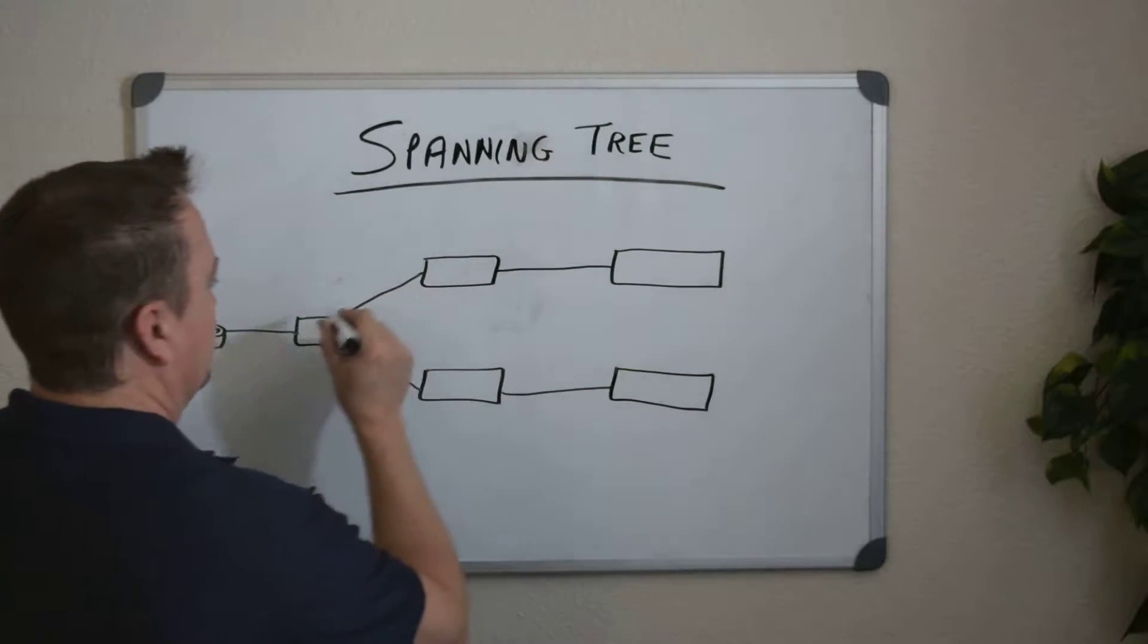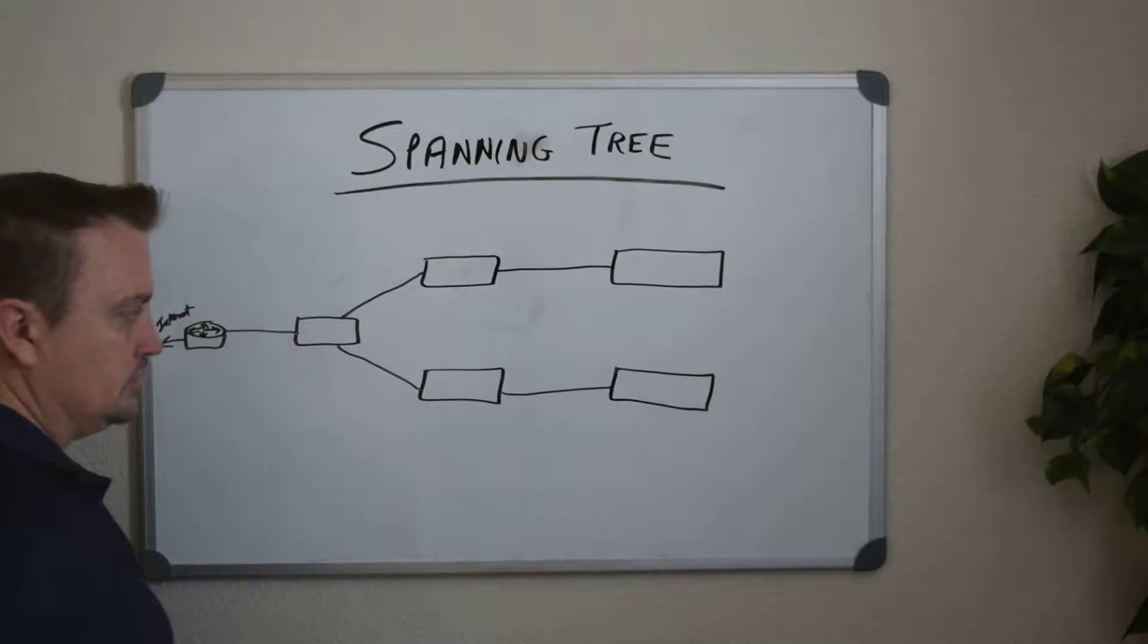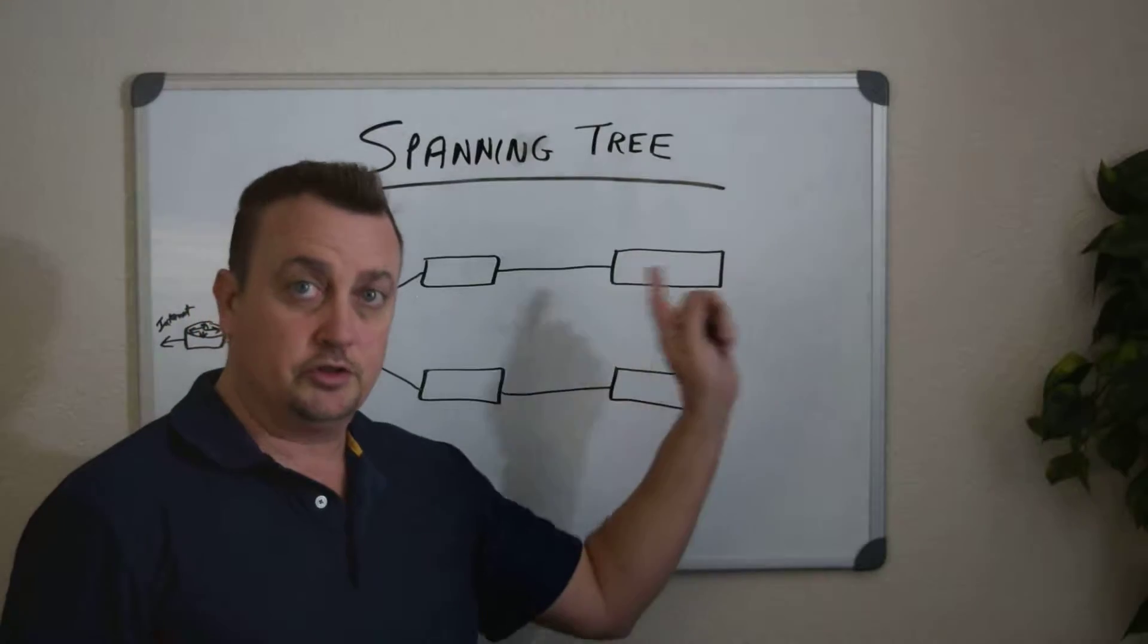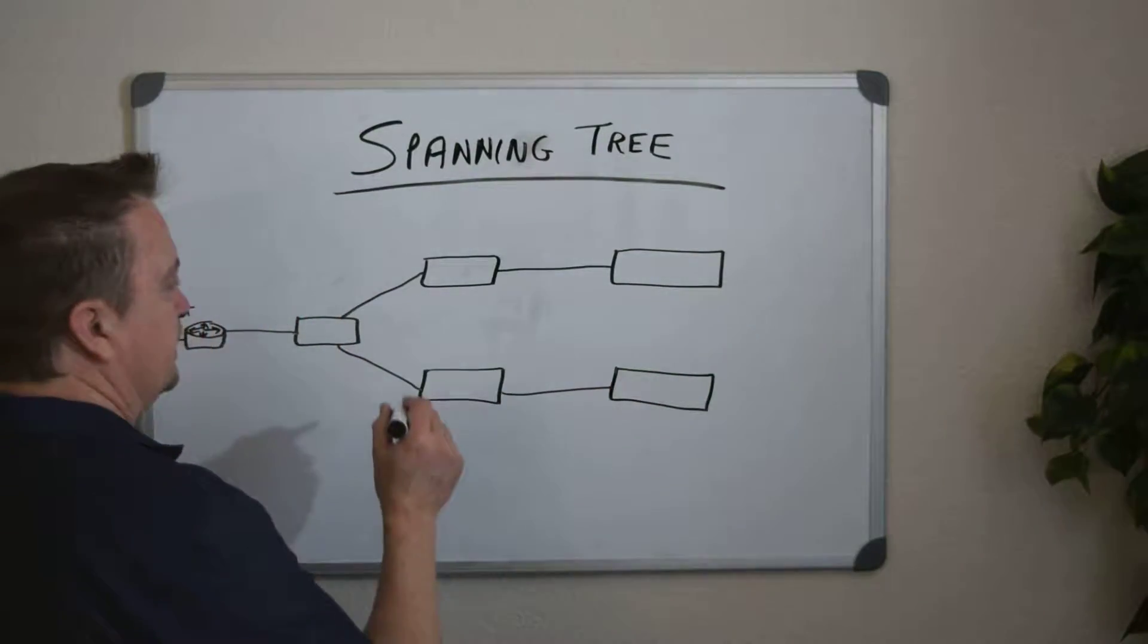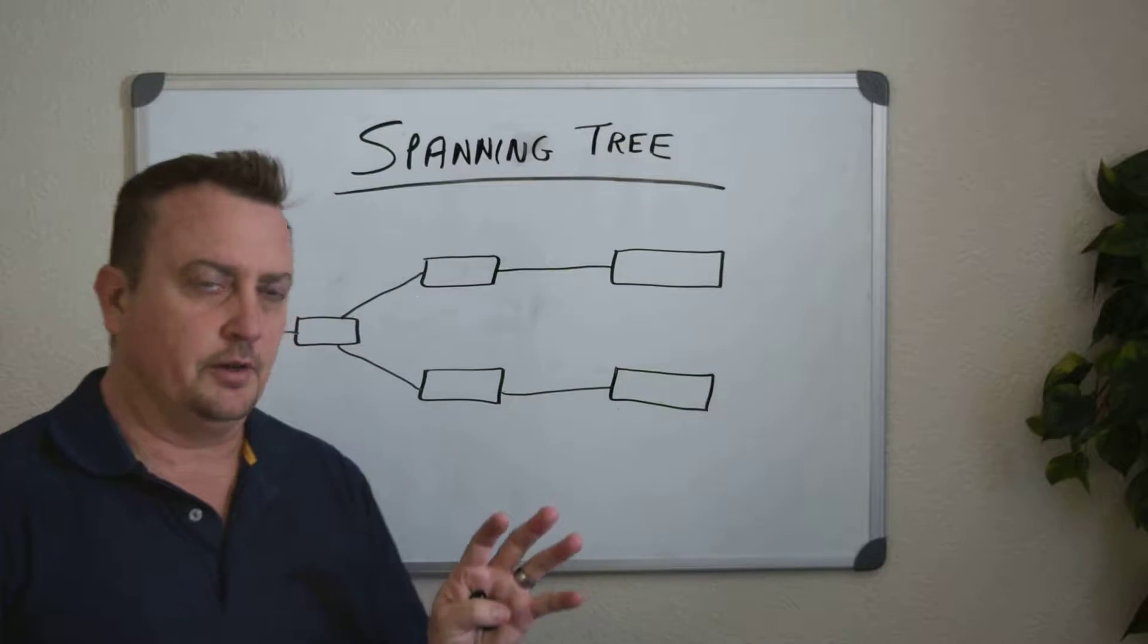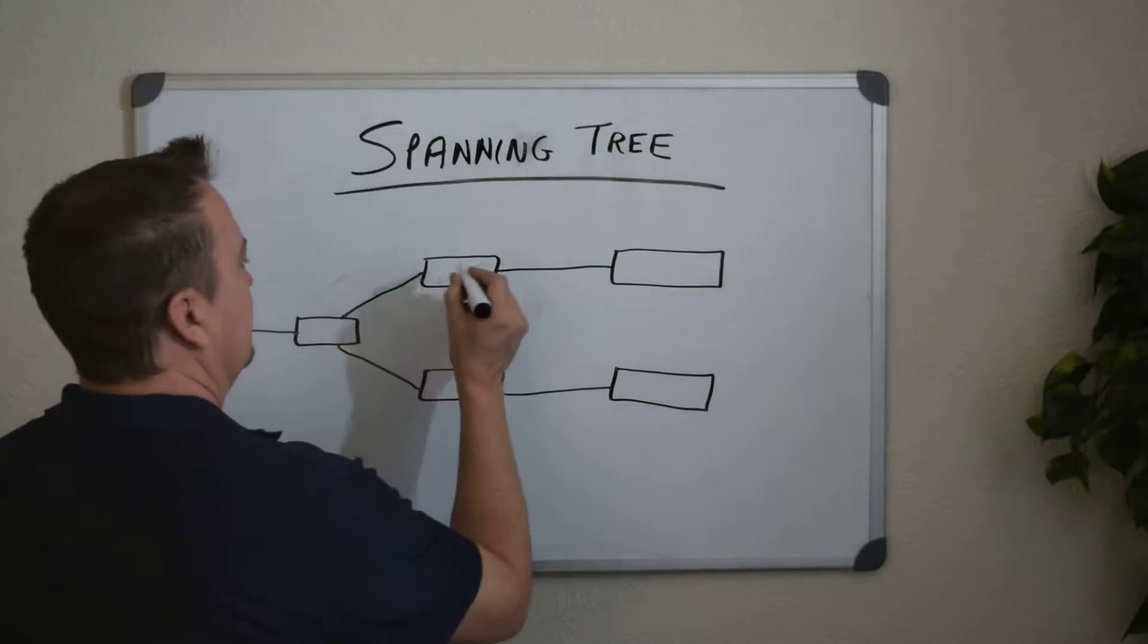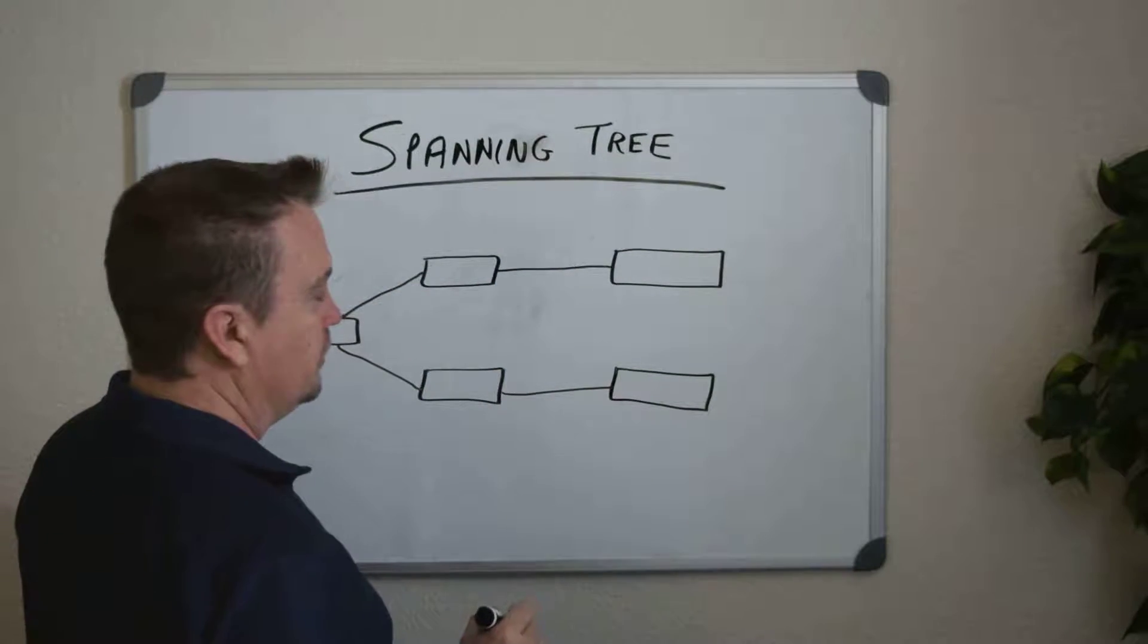But why do we need Spanning Tree? Spanning Tree is configured on most, if not all, of your Layer 2 devices, usually on Layer 2 switches. Spanning Tree has the sole purpose of doing one thing, and that is to prevent physical loops from existing on your network.